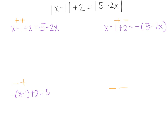The right-hand side stays 5 minus 2x because in this case we are looking at the right-hand side as positive. For the negative-negative case, we'll have negative times the quantity x minus 1, plus 2, equals negative times the quantity 5 minus 2x.